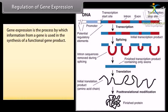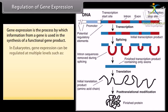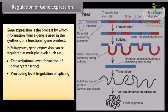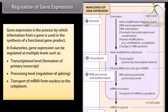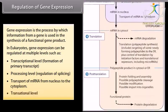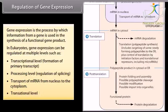Gene expression is the process by which information from a gene is used in the synthesis of a functional gene product. In eukaryotes, gene expression can be regulated at multiple levels such as transcriptional level, formation of primary transcript, processing level, regulating of splicing, transport of mRNA from nucleus to the cytoplasm, translational level, and positive and negative regulation.